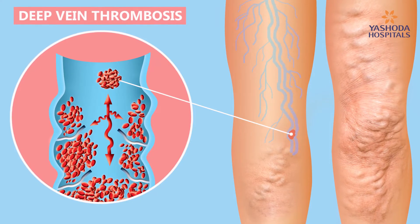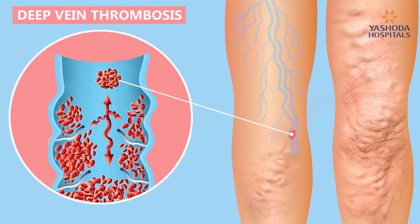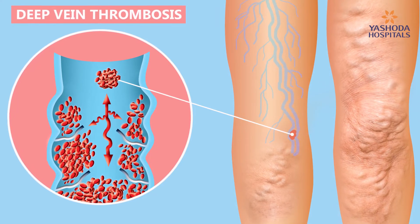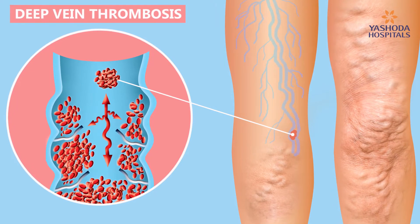How different is deep vein thrombosis from varicose veins? Both are totally different things. Varicose vein is not a life-threatening condition, but DVT can be life-threatening. Patients can get DVT in varicose veins also, but it is quite less common.